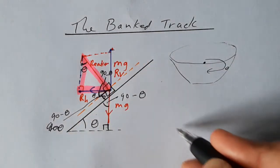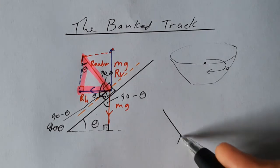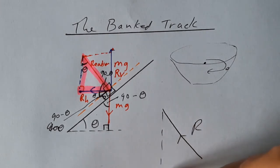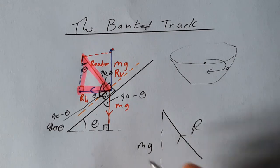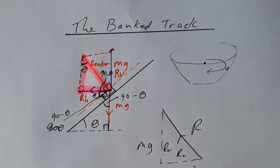So we're going to pick out that triangle now. We've got the reaction force. We've got the vertical component, which must be equal to mg. And we've got the horizontal component, which must be equal to mv squared over r.